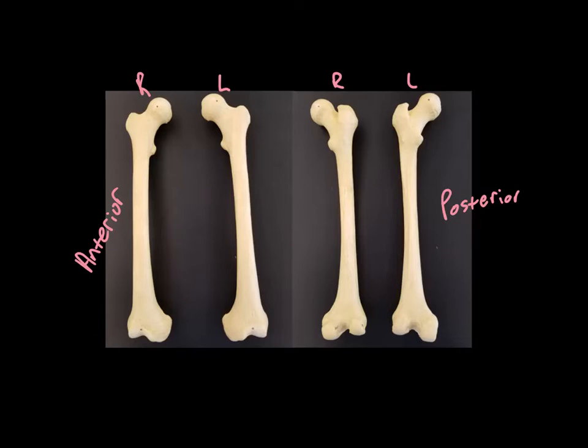That implies that there are condyles, which on the posterior side are these large smooth structures. These are the condyles. Just like the epicondyles, there's two of them, one on each side. Remember the head was medial, so the condyle that's on the same side as the head is the medial condyle and the other one is the lateral condyle.